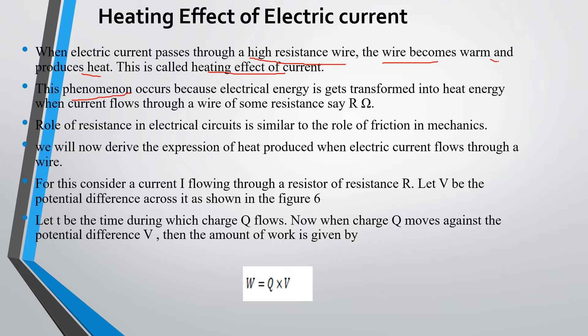This phenomenon occurs because electrical energy gets transformed into heat energy when current flows through a wire of some resistance R. Role of resistance in electrical circuits is similar to the role of friction in mechanics. We will now derive the expression of heat produced when current flows through the wire.